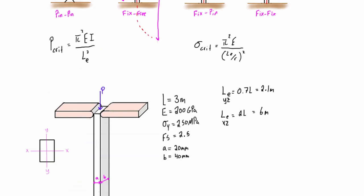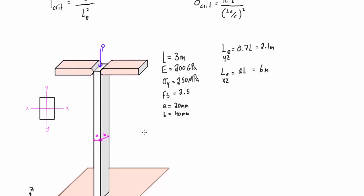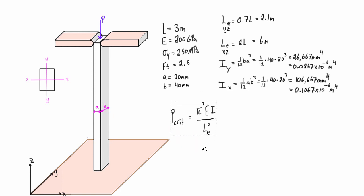Let's grab this expression. We're going to need the moments of inertia about the X axis and the Y axis. We've already calculated those in previous videos for this exact cross-section, so I won't bore you with those. We're just going to plug them into the P critical expression. We have to do this for each possible direction of buckling.